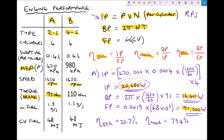Finally we can calculate our brake thermal efficiency. The best way to think of this is it's the amount of energy being taken from the fuel and delivered as power to the road — representing the overall engine efficiency. We have a brake power of 16,415 divided by a fuel power of 91,200, which gives us a brake thermal efficiency of 18.0%.